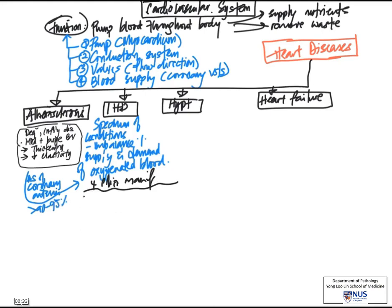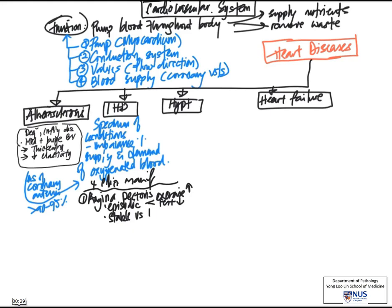There are four main clinical manifestations of ischemic heart disease. One is angina pectoris, which has a very specific definition: it is episodic chest pain brought on by exercise and relieved by rest. There are two main clinical types — stable versus unstable. Unstable angina occurs when there is an atheromatous plaque with ulceration or acute plaque change and perhaps the beginning of thrombus formation. This is an important clinical symptom to recognize because it may herald impending myocardial infarction.